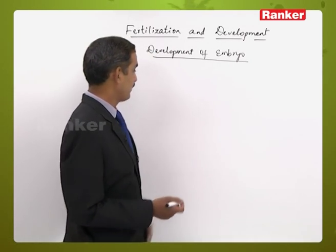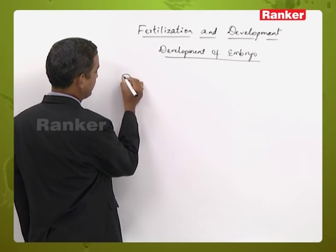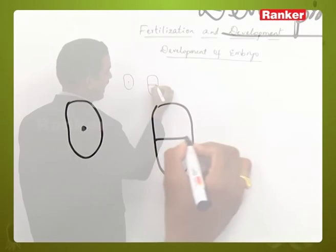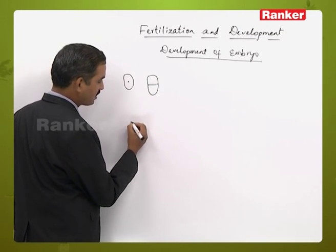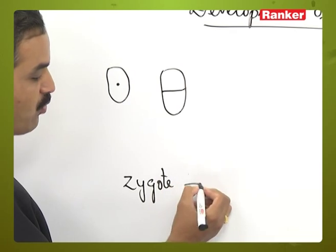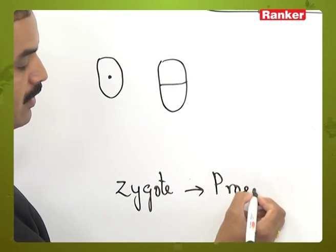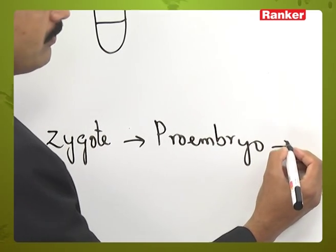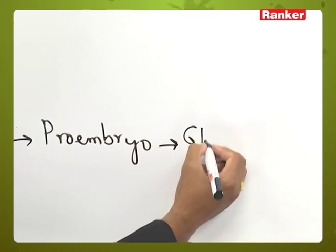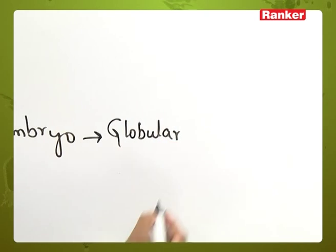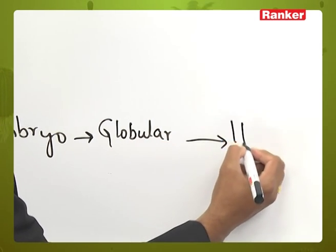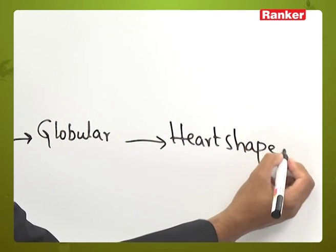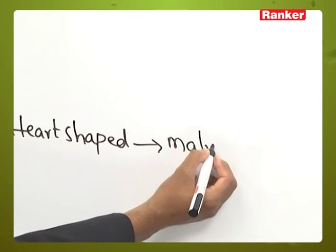In this process, the unicellular structure — the zygote — will undergo divisions. The first change taking place is that the zygote will be converted into a pro embryo. From the pro embryo, a globular embryo will be formed. From the globular embryo, a heart-shaped embryo is formed, and from the heart-shaped embryo, the matured embryo is formed.